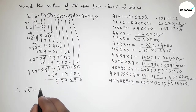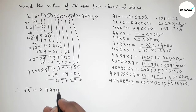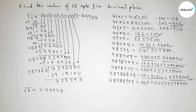Therefore the value of root 6 up to 5 decimal places is 2.44948. That's all — thanks for watching! If this video was helpful, please share it with your friends.